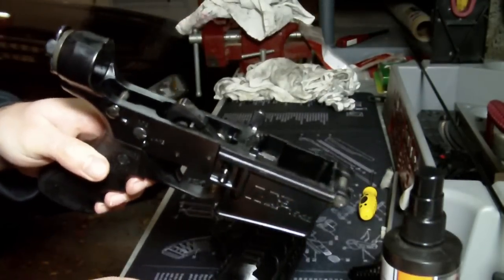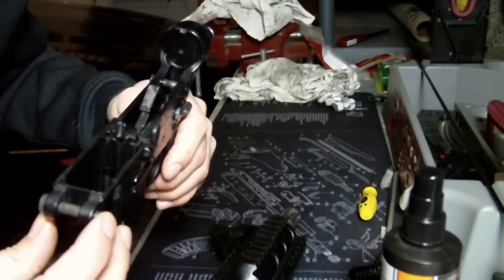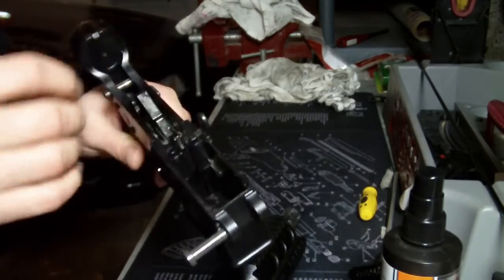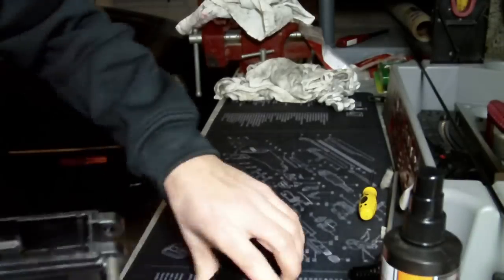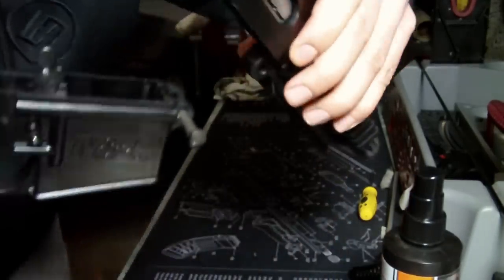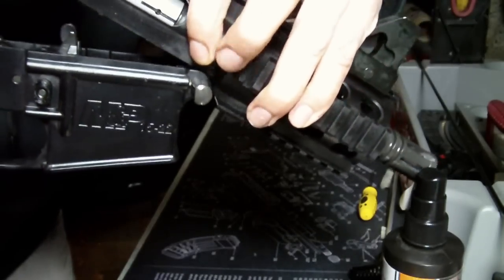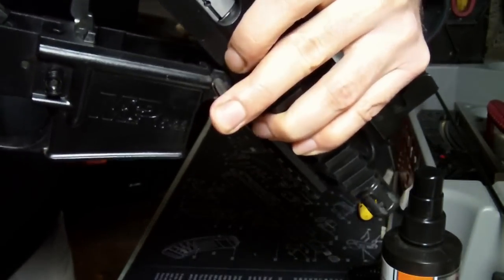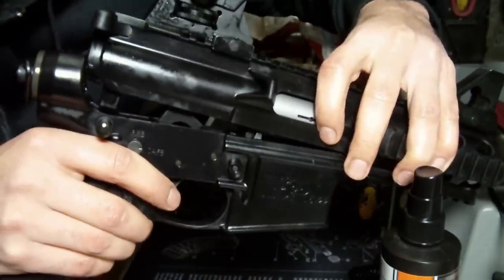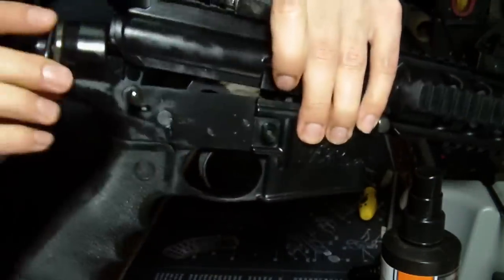Once you have that done, you should be able to go ahead and reattach it to your lower assembly or lower receiver. You're going to want to get your pins into the correct position so it's able to be put on to the lower receiver. Your upper receiver then will just go fit on there, and you should be able to put your pin right back through on this side.